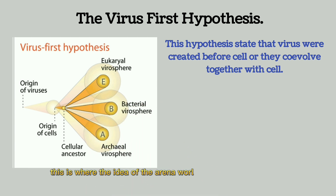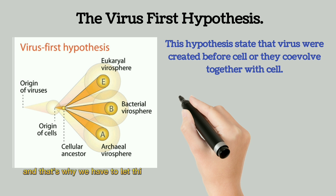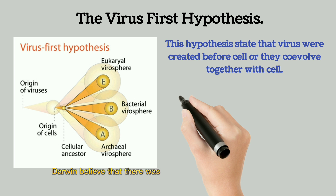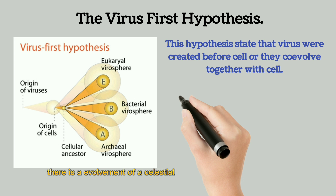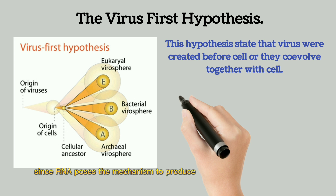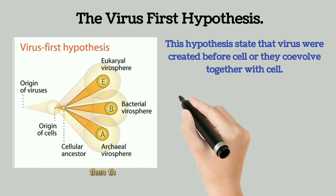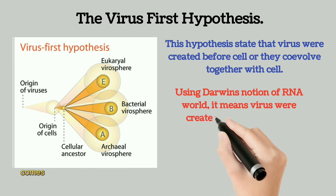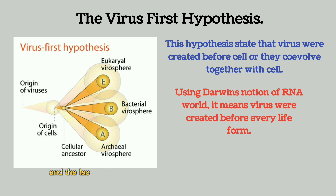This is where the idea of the RNA world, the First Universal Common Ancestor, and the Last Universal Common Ancestor is born. Using Darwin's theory of evolution, Darwin believed that there was a Big Bang where reactions between certain elements eventually led to the evolution of celestial bodies. After some billion years, there was the RNA world. Since RNA drives the mechanism to produce DNA and eventually cells, we assume the first components of life that the RNA world produced were RNA viruses, then DNA viruses. This means viruses predate even the First and Last Universal Common Ancestors.